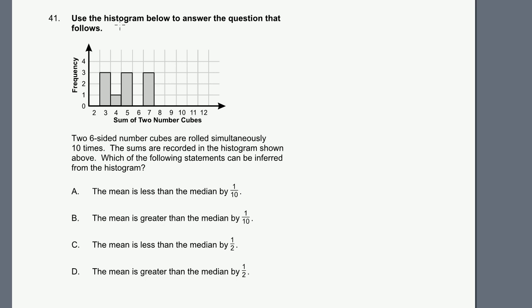Problem 41. Use the histogram below to answer the question that follows. Here's our histogram. Two six-sided number cubes, they sound suspiciously like regular dice, are rolled simultaneously 10 times, just like you're rolling two dice 10 times. The sums are recorded in the histogram shown above. Which of the following statements can be inferred from the histogram?